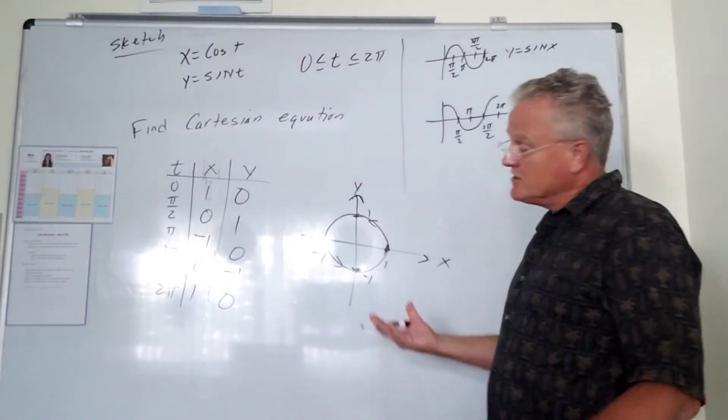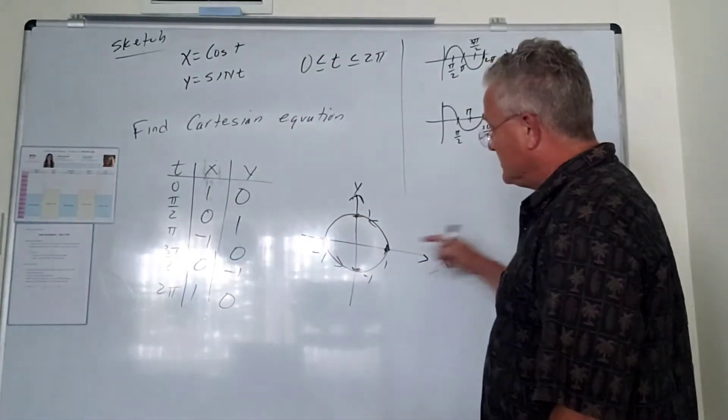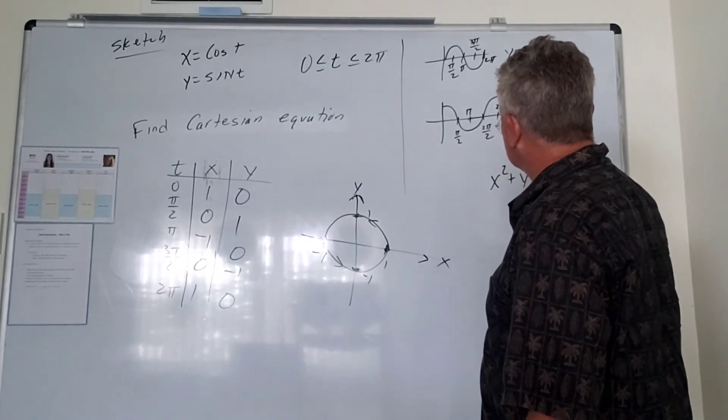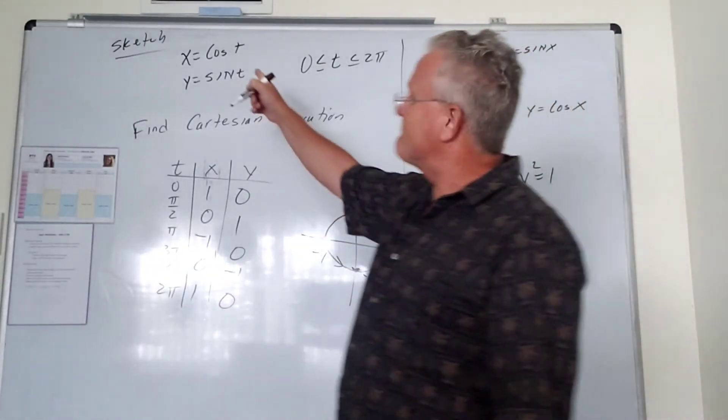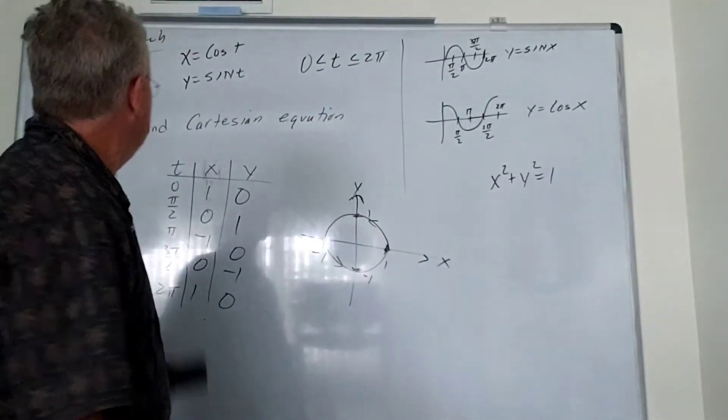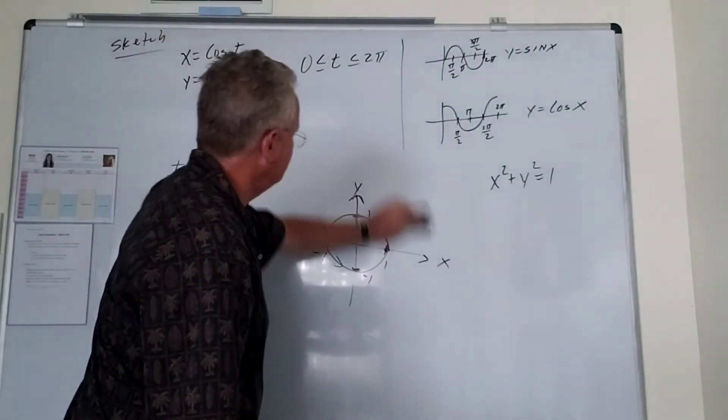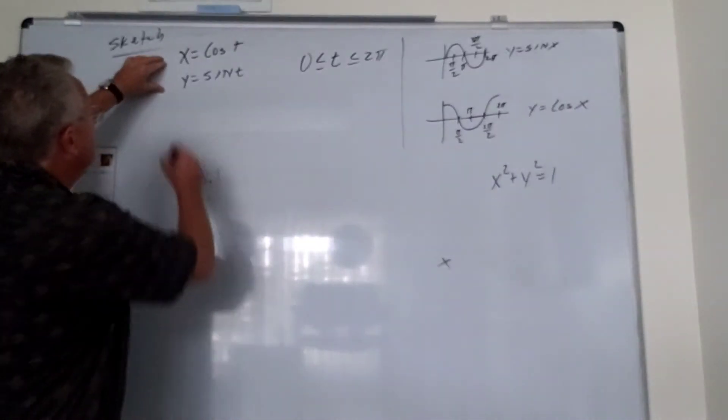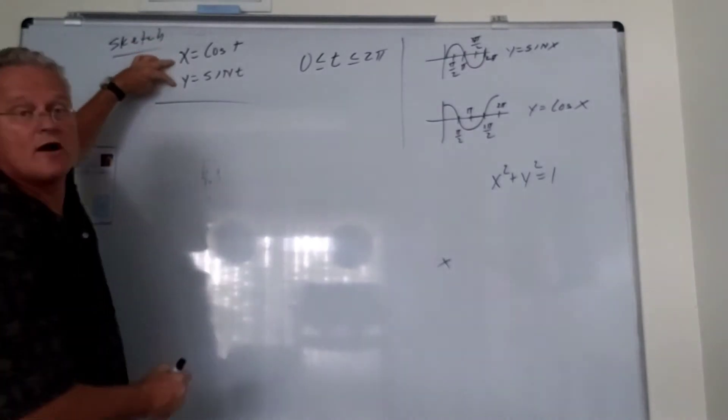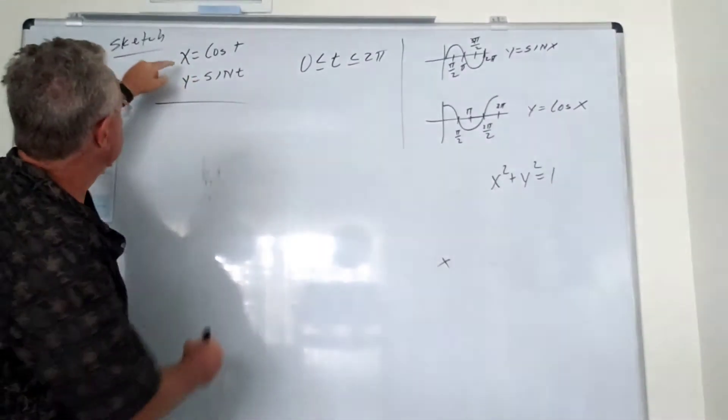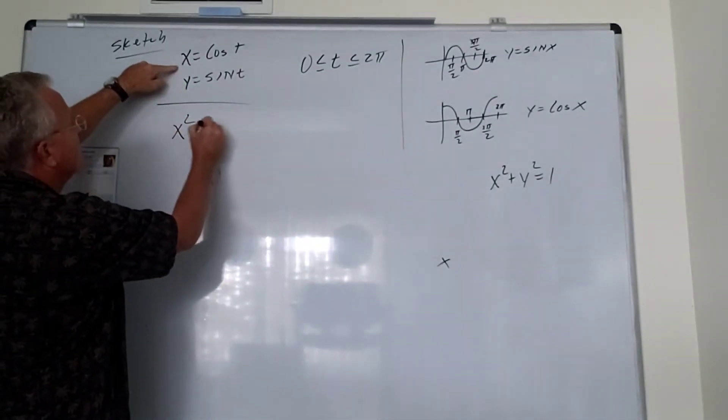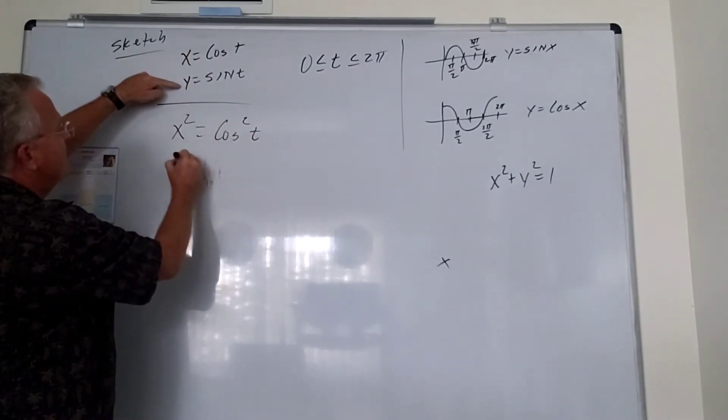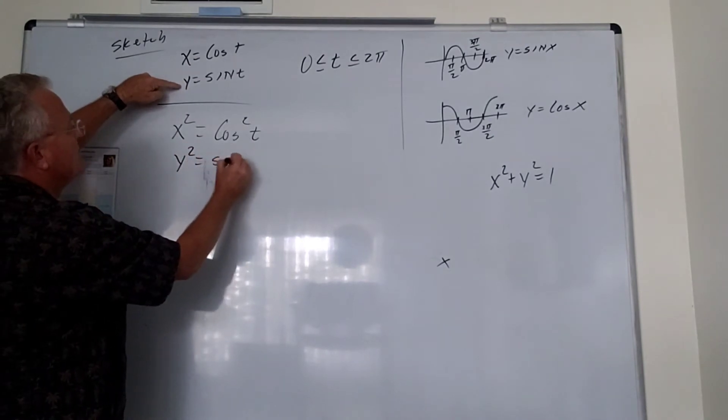Well, we know the Cartesian equation for a circle centered at the origin with a radius of 1 is x squared plus y squared equals 1. But how do we get that from this? Let's say we didn't know that. Well, let me erase this. So what we want to do here first is square both sides of each equation. So when I do that, I get x squared equals cosine squared, and likewise, y squared equals sine squared.